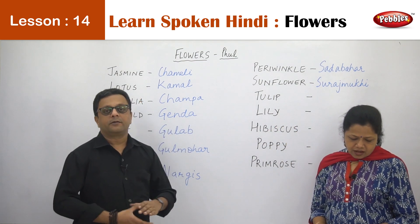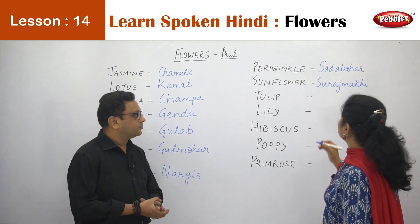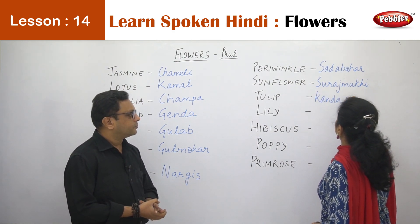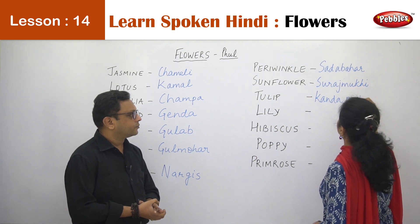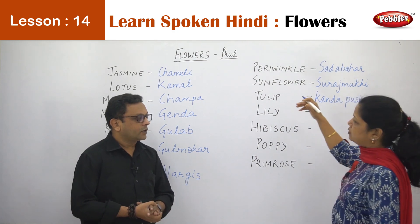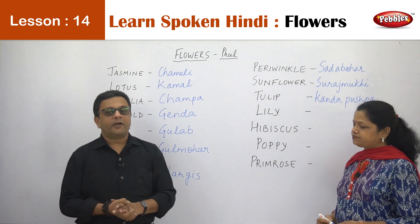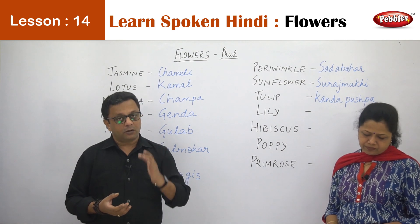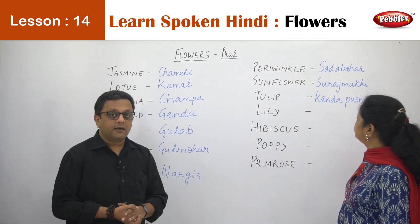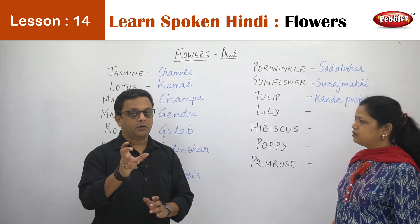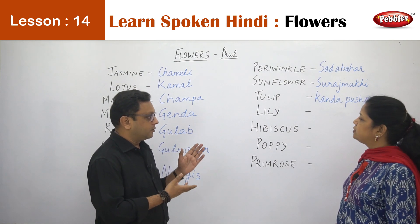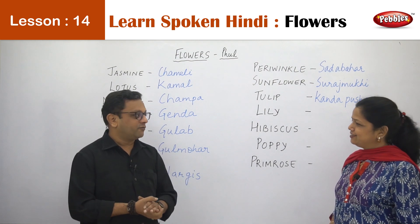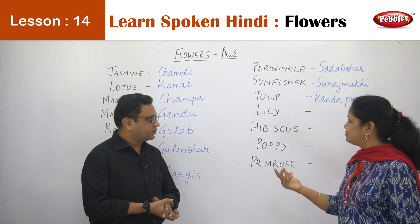Then we have the Tulip. Now Tulip is called Kanda Pushpa. Pushpa in Hindi is again called Phool — it is a very pure word, actually a Sanskrit word. Pushpa means flower. And Kanda is generally a root — the connection with the root is unclear but it is named like that.